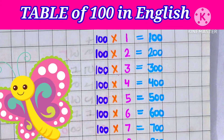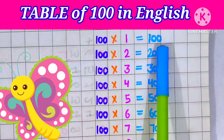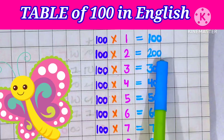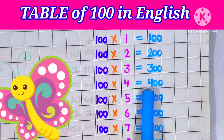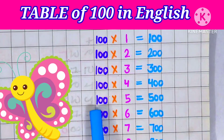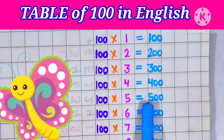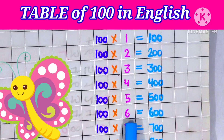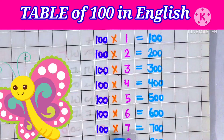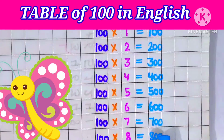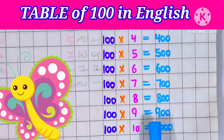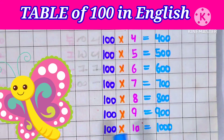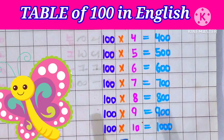Table ko repeat kareenge. Hundred ones are hundred. Hundred twos are two hundred. Hundred threes are three hundred. Hundred fours are four hundred. Hundred fives are five hundred. Hundred sixes are six hundred. Hundred sevens are seven hundred. Hundred eights are eight hundred. Hundred nines are nine hundred. Hundred tens are thousand.